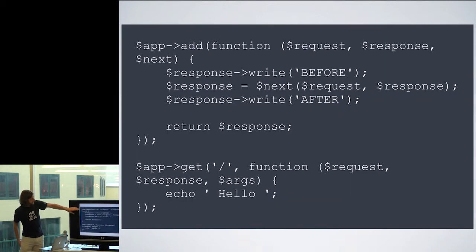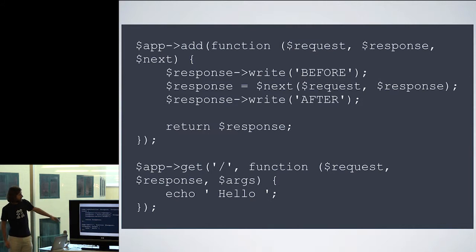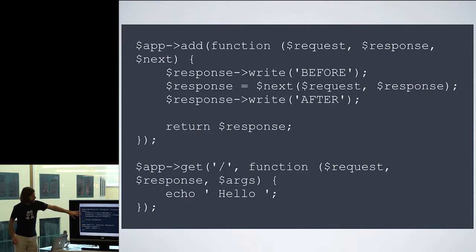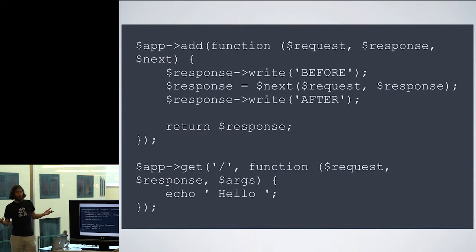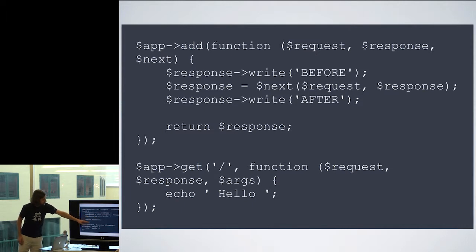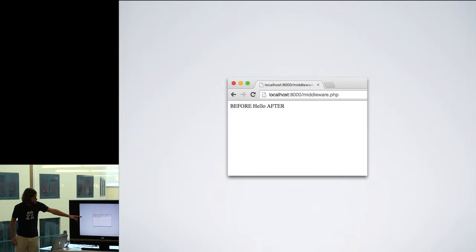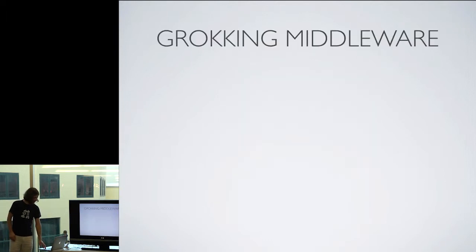To demonstrate middleware, we're going to use application-level middleware to put "before" and "after" around that hello world message. The idea is: before we ever get to the route, we invoke this function first, then invoke the actual route callback. On the way back out, we come back through the middleware. The response gets "before" added to it, we pass it on to the next callable, which is the route callback, and on the way back through we execute more code before finally returning the response. The result ends up being "before, hello, after" — a simple middleware demonstration.